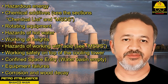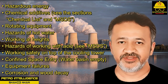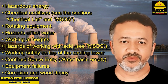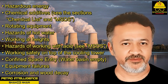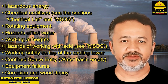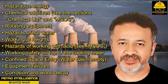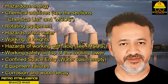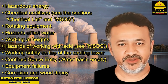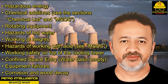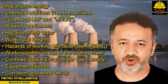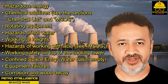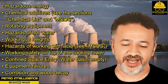The safety aspects of the cooling tower system include: hazardous energy, chemical additives (see chemical list and MSDS), rotating equipment, hazards of hot water, working at heights, hazards of working with acid (see MSDS), working safely on top of the cooling tower, confined space entry with water basin empty, equipment failures, and corrosion and wood decay.